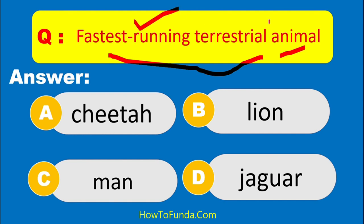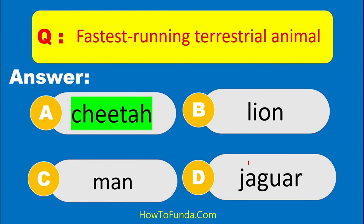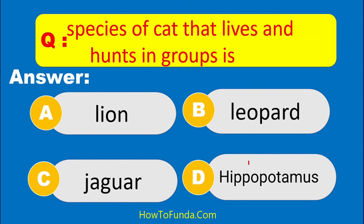Is it cheetah, lion, man, or jaguar? Cheetah is the fastest running animal. Next question: which species of cat lives together and hunts in a group?